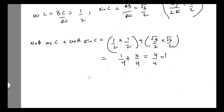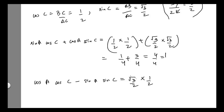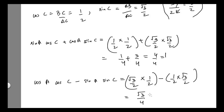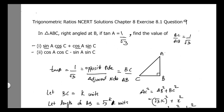The second part is cos A·cos C − sin A·sin C. Substituting the values: (√3/2)(1/2) − (1/2)(√3/2) = √3/4 − √3/4 = 0.